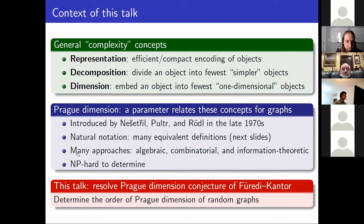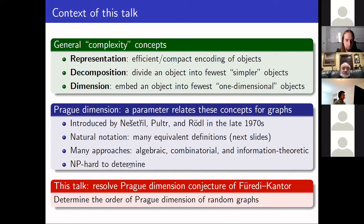Previously, many approaches have been applied to study product dimension, including algebraic ones, combinatorial ones, and information-theoretic ones. Here we use a probabilistic approach. It has been proved that it is NP-hard to determine product dimension for a general graph, so determining the product dimension of a graph is an intriguing but hard problem. In this talk, I will give a result where we determine the order of product dimension of random graphs, and it resolves a product dimension conjecture by Foudie and Counter.